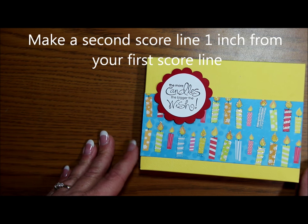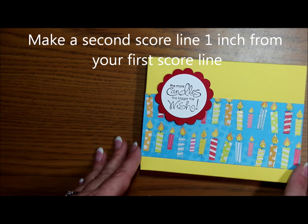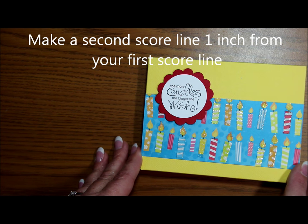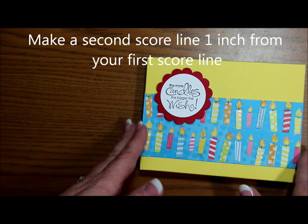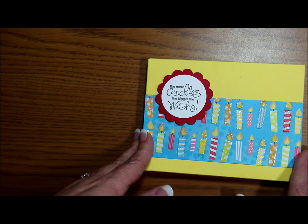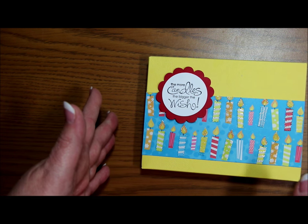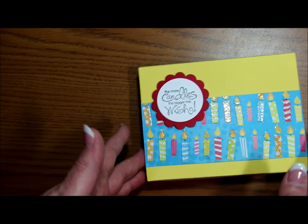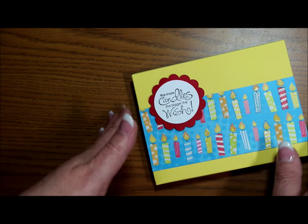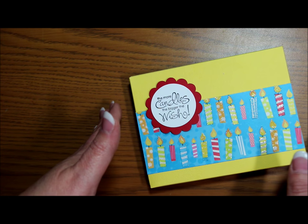And then the second is you'll need to make a second score line one inch from where you made your first score line. I'm going to show you all that in my demonstration in just a moment and it will all be crystal clear. So let me get set up here and I'll show you exactly how you can make cute boxes to fit all of your card sizes using your envelope punch board.